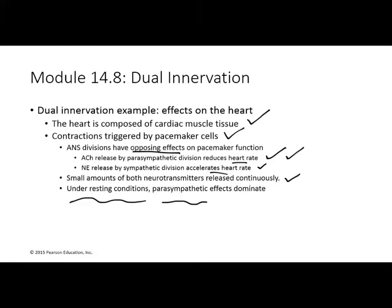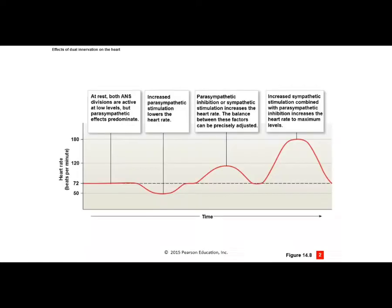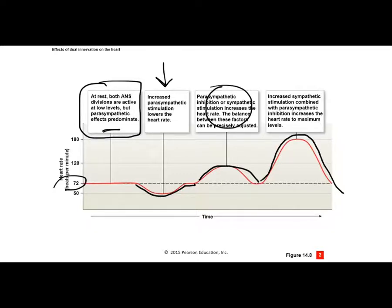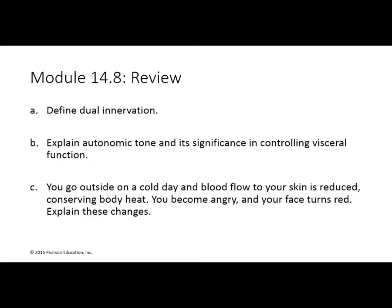Looking at heart rate on a graph: at rest, both sympathetic and parasympathetic are active but parasympathetic is in charge. If parasympathetic increases further, heart rate goes down. If the sympathetic nervous system takes over — perhaps you're concerned or scared — heart rate goes up, and during a strong fight-or-flight response, heart rate rises much higher. Both systems continuously influence the heart, which is dual innervation. Also consider how cold days affect blood flow to conserve heat.